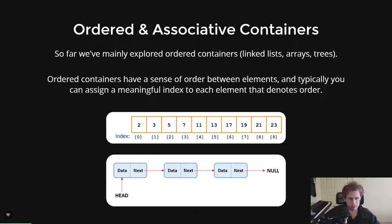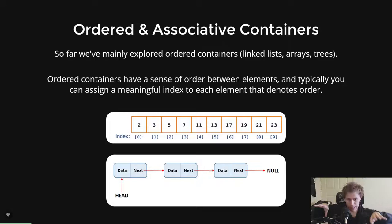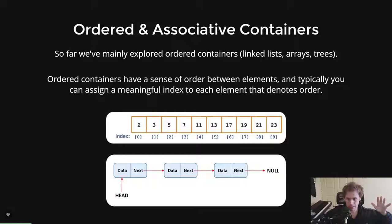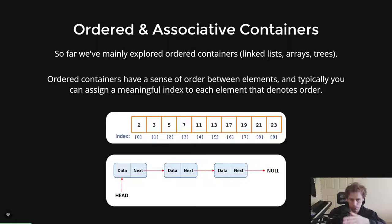Trees, linked lists, and arrays are ordered containers. The items have a sense of order — and I don't mean sorted. There's a difference between a sorted array and an unsorted array and a sequential container, because a sequential container essentially just means you could apply a meaningful index to it. A linked list doesn't have indexes but has a sense of sequence. An array has indexes. A binary tree, even though it's a mishmash tree structure, you could still print elements out pre-order and assign numbers to them — it's indexable.